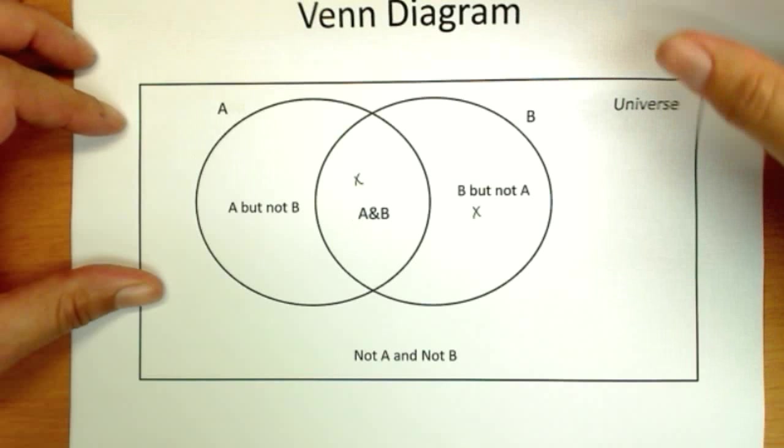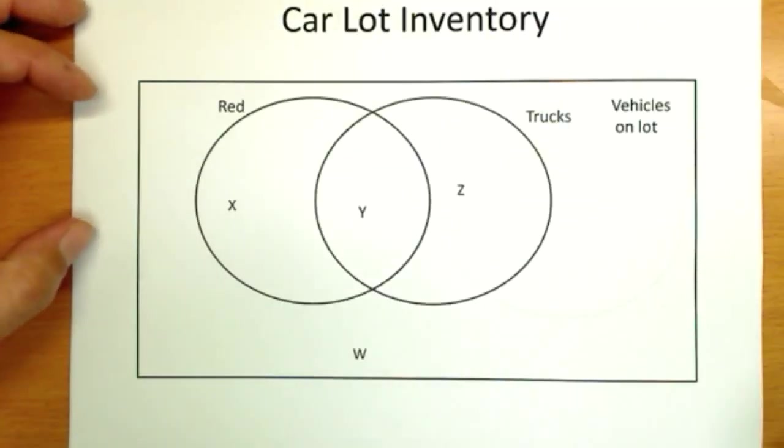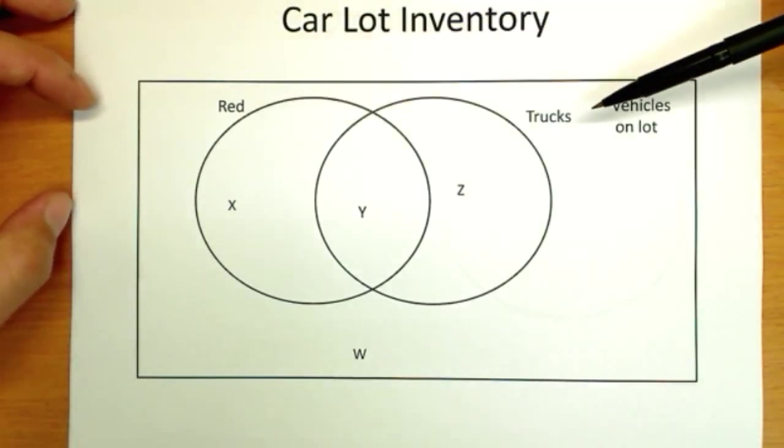So let's give a more specific example that we can talk about. So this is a car dealership. They have vehicles on their lot, and we're going to break it into two categories. Red and trucks.